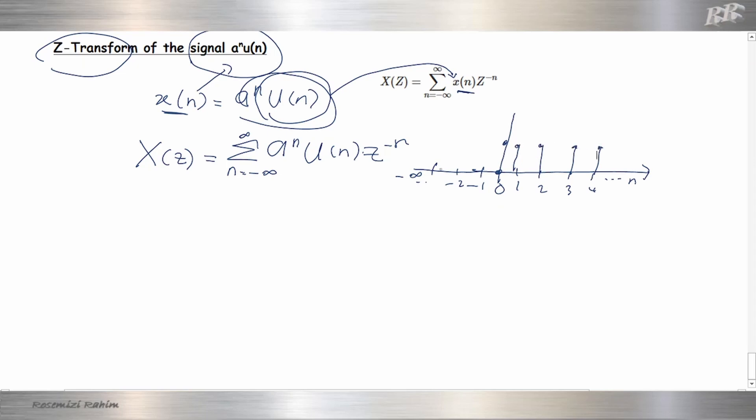Step function means that a sequence after 0 until infinity will be 1. From 0 to infinity, unit step is 1. From minus 1 until minus infinity, unit step is 0. So we have step function 0 and step 1. That's what we call unit step function. From 0 to infinity equals 1, less than minus 1 equals 0.